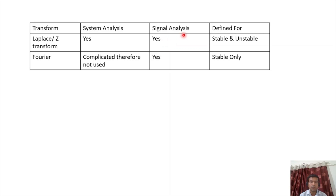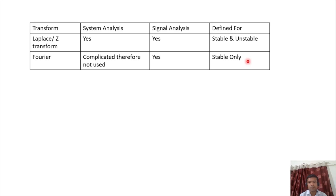Laplace and Z-transforms are defined for stable as well as unstable signals and systems. The Fourier transform or DFT is mainly used for signal analysis and becomes really complicated for system analysis, therefore it is rarely used for system analysis. The Fourier transform is defined only for stable signals, unlike Laplace which is defined for stable as well as unstable signals.